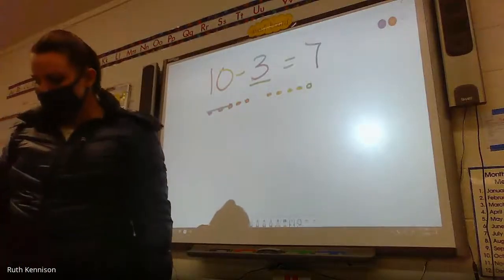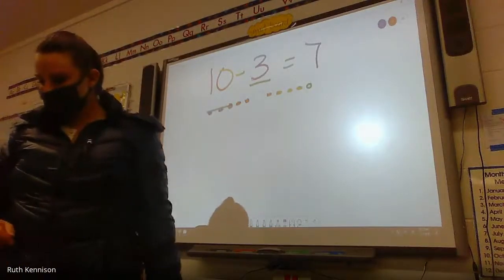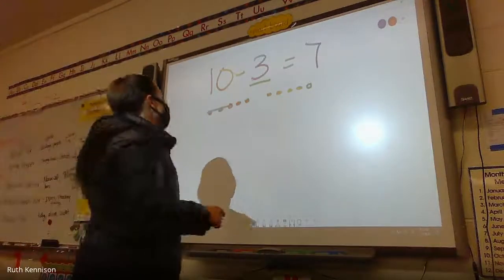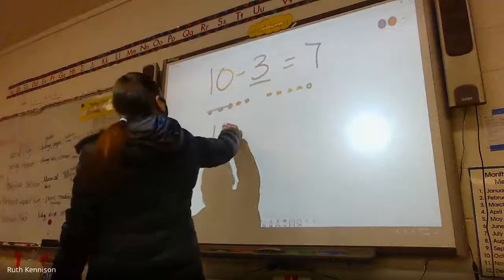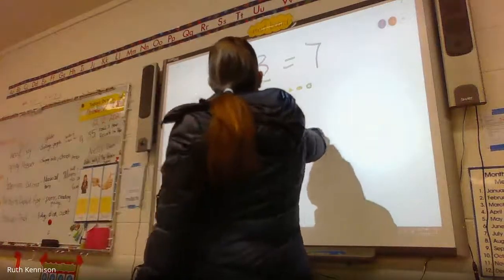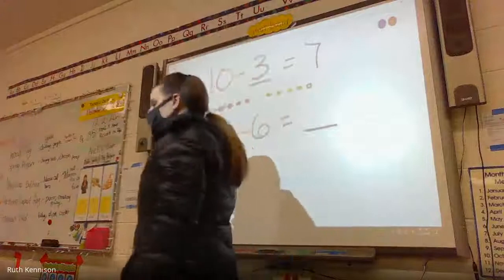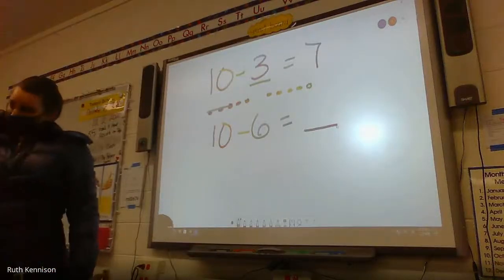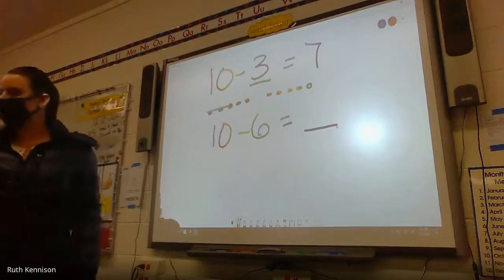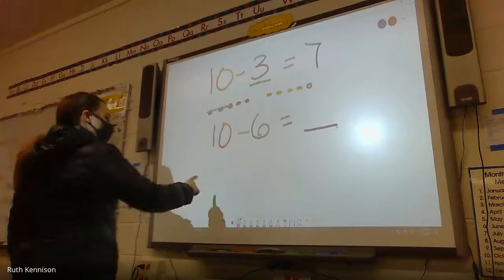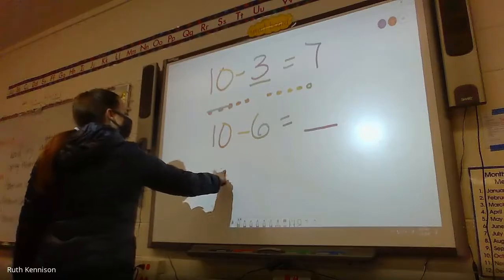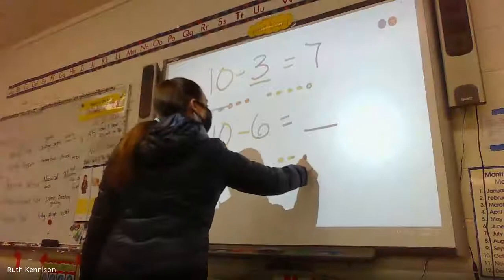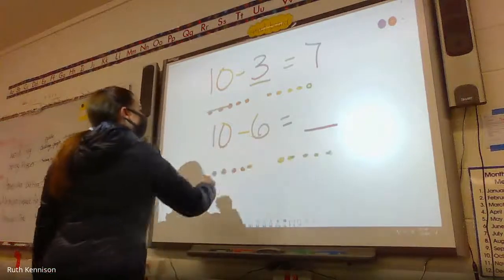What about... I have ten. I take away six. How many do I have left? Now we have our... What I want you to do, I need Anaya to put that away before she loses her water bottle privileges because she won't stop playing with them. If you guys are going to draw ten dots. One, two, three, four, five, six, seven, eight, nine, ten. And we're going to cross six of them out.